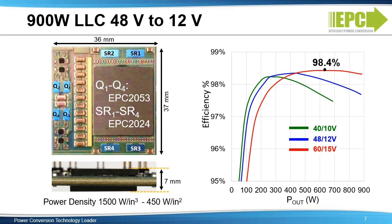Again, at 48 volts to 12 volts, the LLC topology is the best solution for more than 600 watts and achieves more than 98% efficiency.